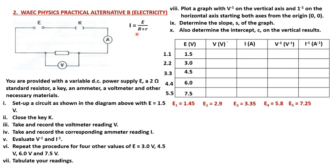The next thing I have to do is find the sum of R plus r. So I'm adding the external resistance to the internal resistance for each row. I get these values for R plus r for the various EMF values. For EMF 1.5, I get 3.1; for EMF 2.9, I get 4.2, and so on and so forth.